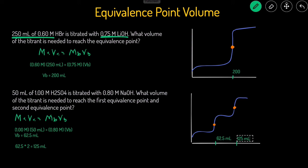And that's how you can calculate the volume of titrant needed to reach the equivalence point by using the equation MAVA: molarity of acid times volume of acid equals molarity of base times volume of the base.